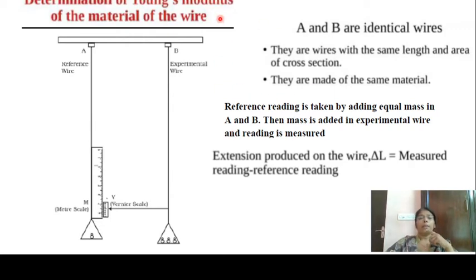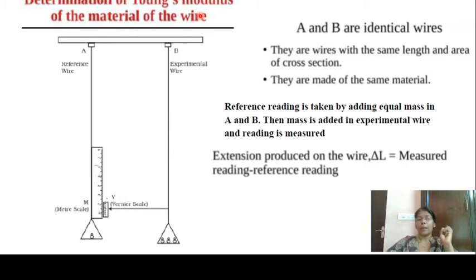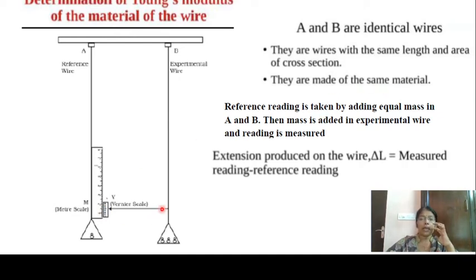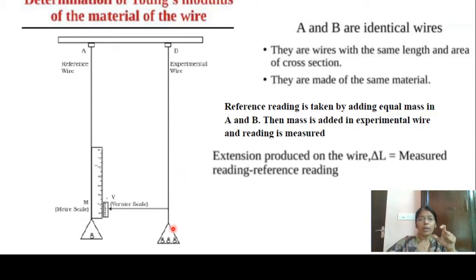Now let's discuss how Young's modulus is determined experimentally. We use a wire of the same material, same length, and same area of cross-section. We apply a deforming force and measure the extension. Using two measurements of the same length of wire, we measure the length of the extension.